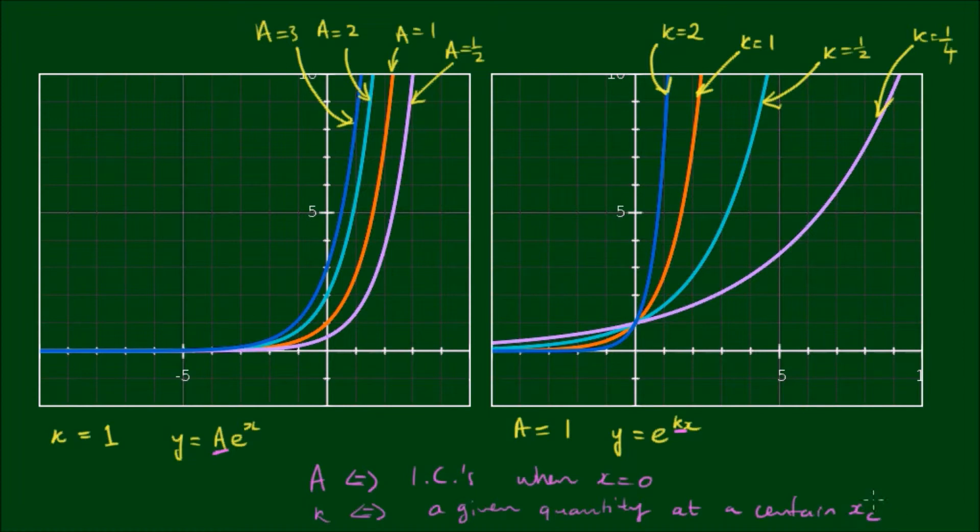And k is determined by a given quantity at a certain time, or a certain x value, marked as x sub c. This is the two bits of information we need to determine the values of A and k to form an explicit solution from the general solution y equals A times e to the kx.